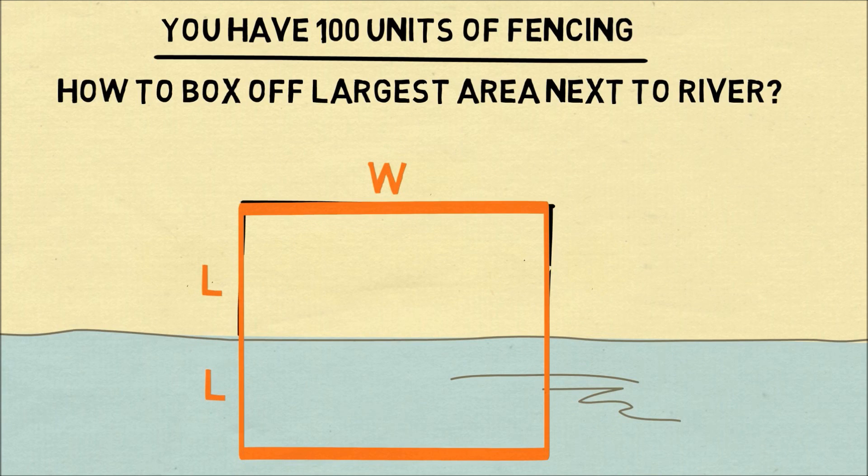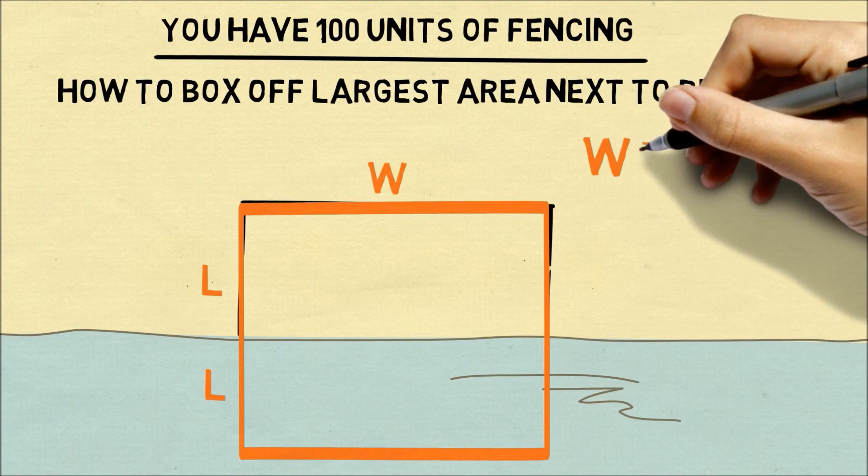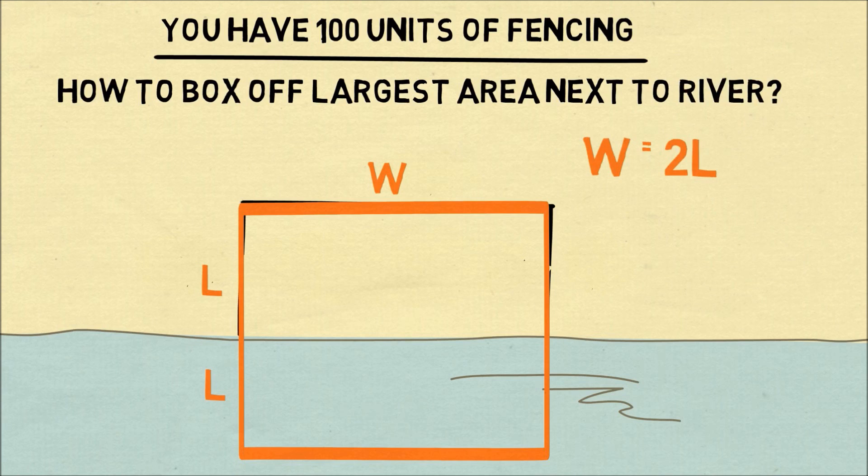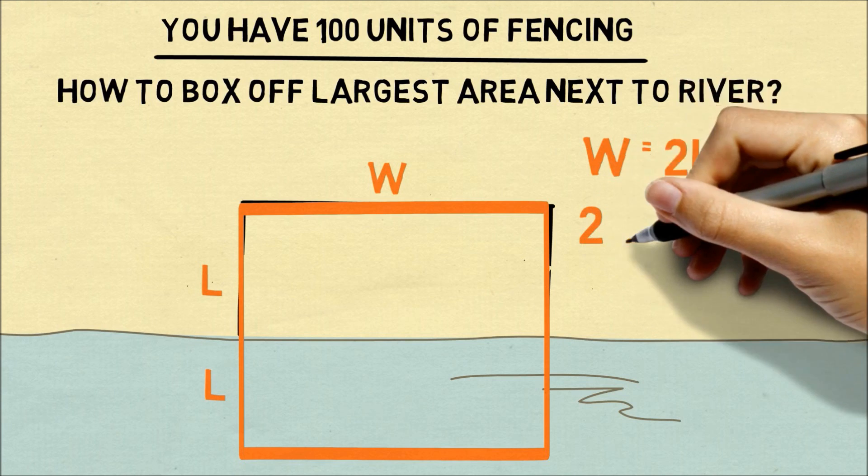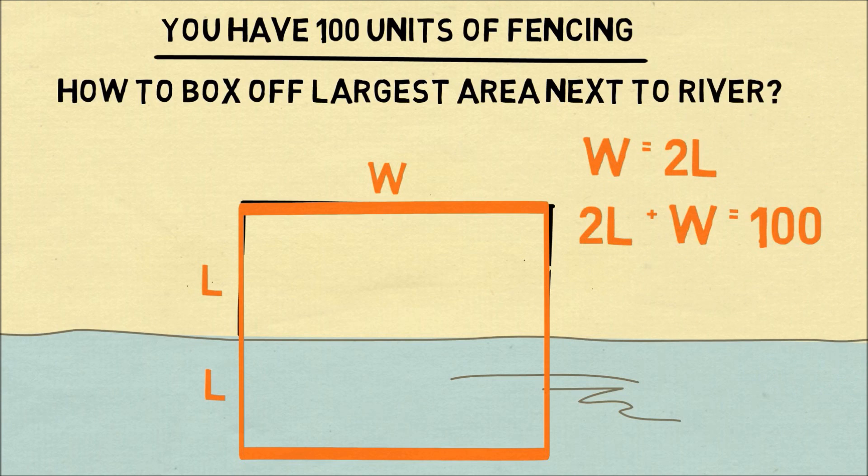So this rectangle has a width of W and a length of 2L. In order to box off the largest area this figure must be a square. So the width has to be equal to two times the length.